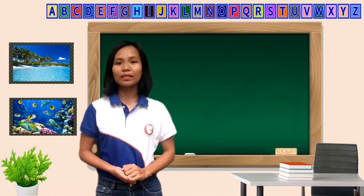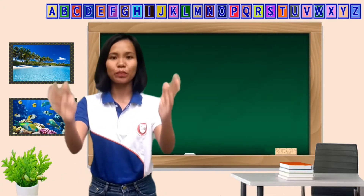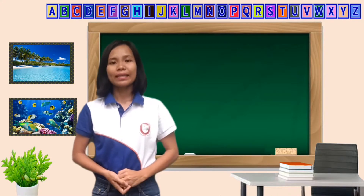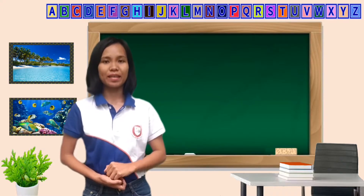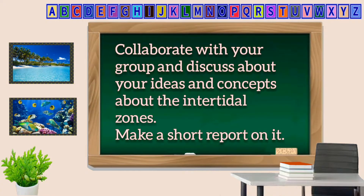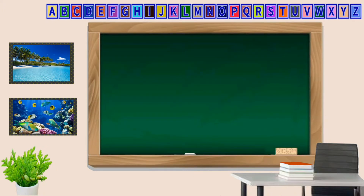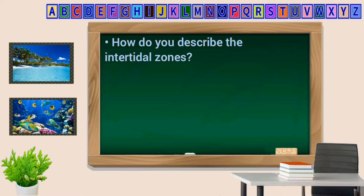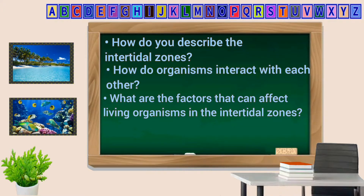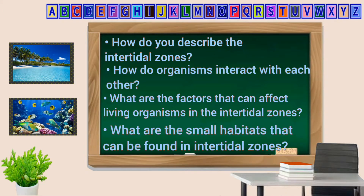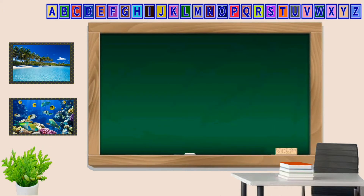Now, let's have a group work. I assign you — here is group 1, group 2, and group 3. You're going to collaborate with your group and follow the instructions. Discuss your ideas and concepts about the intertidal zones and make a report. The content may include: How do you describe the intertidal zone? How do organisms interact with each other? What are the factors that affect living organisms? What are the small habitats found in the intertidal zone? I'm giving you 10 minutes.